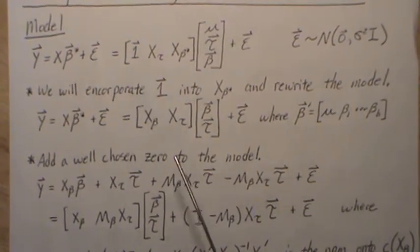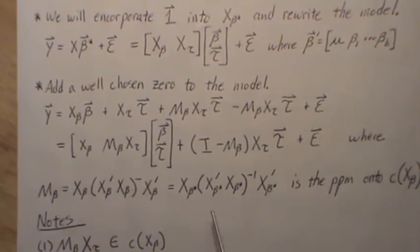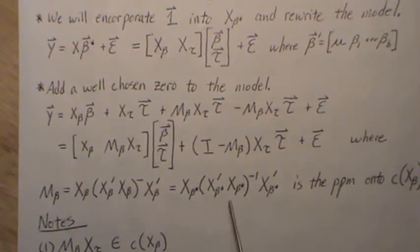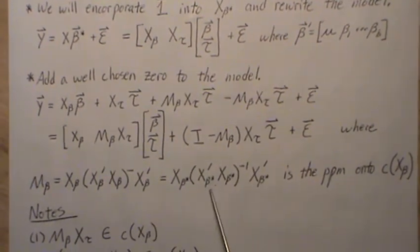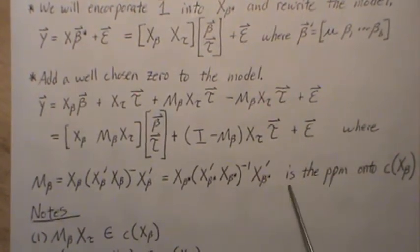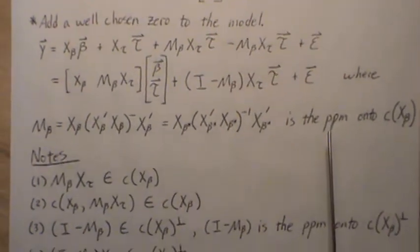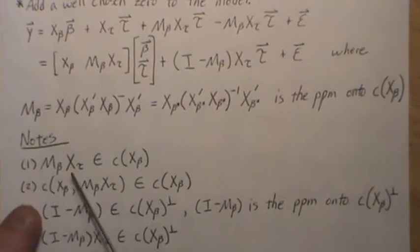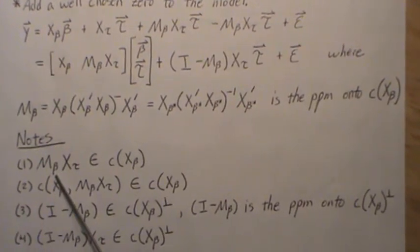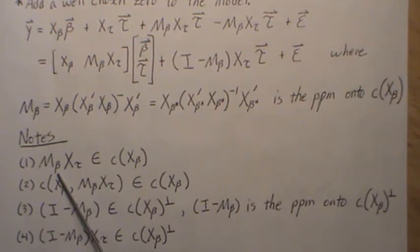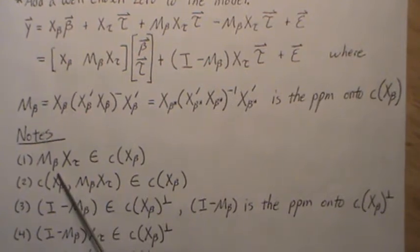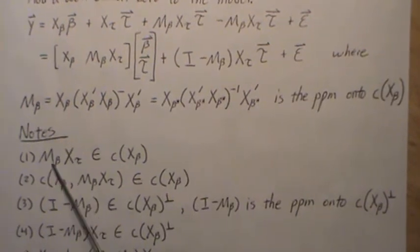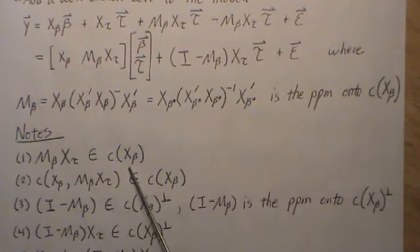If you add all the columns of X_beta you get the one vector, so they're not independent. This is equivalent to taking out the column of ones and recalculating the perpendicular projection matrix — then it's full column rank and a regular inverse applies, and they're the same. In later videos we use this form because it's easier to calculate. M_beta is a perpendicular projection matrix onto the column space of X_beta, so if you pre-multiply any matrix by M_beta, it projects it into the column space of X_beta. So M_beta·X_tau lies in the column space of X_beta.